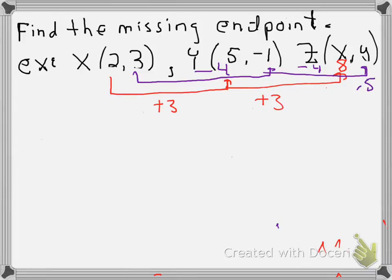which is the answer we'd gotten on the previous page. So again, the missing endpoint has coordinates Z is 8, negative 5.